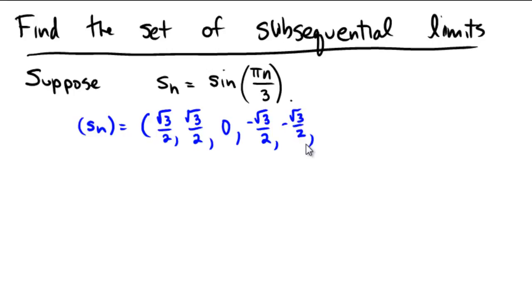And then 6 pi over 3 would just be 0, for the sine value, the y coordinate. And then this cycle of 1, 2, 3, 4, 5, 6 values is going to repeat over and over.